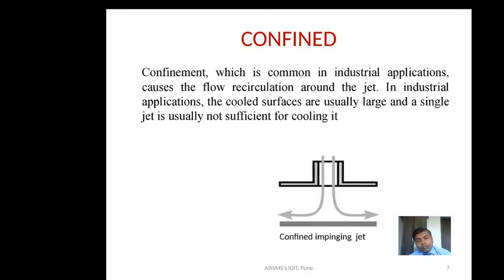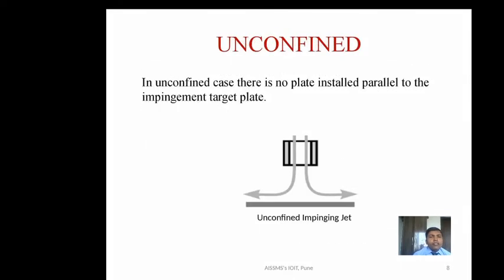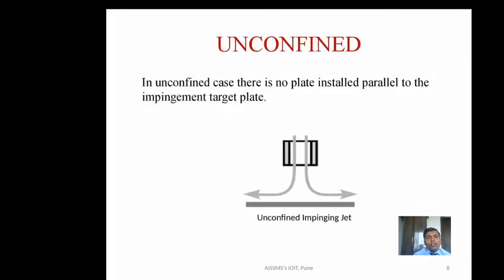What kinds of jet impingement techniques are there? There is a confinement technique — fluid comes from one side with a confined plate, and there is a target impingement surface on which the cooling or heating mechanism occurs. This is the region where localized heating and cooling will occur. In the unconfined type, we have not confined the nozzle exit region — no parallel plate is installed alongside the target surface.